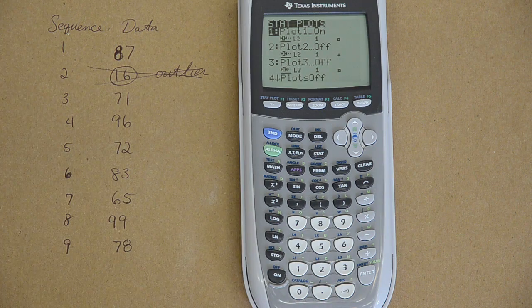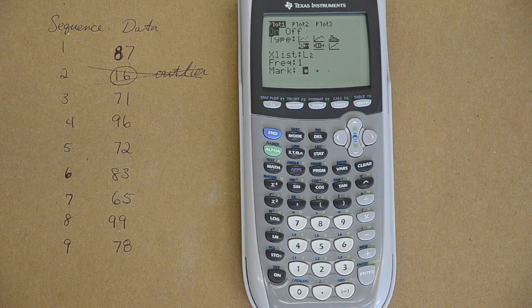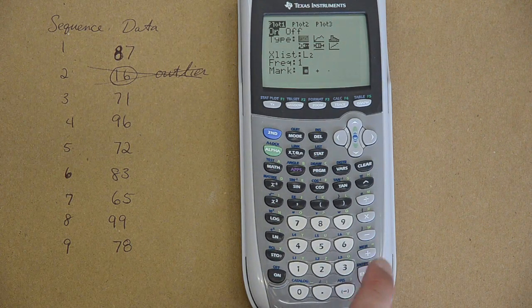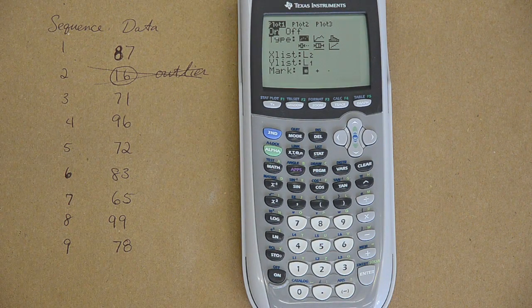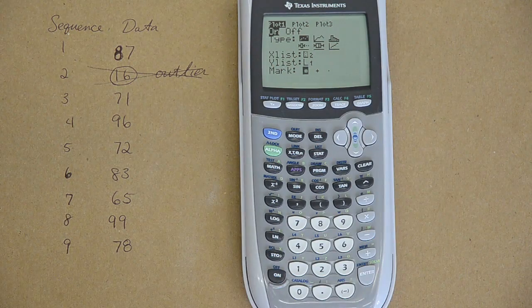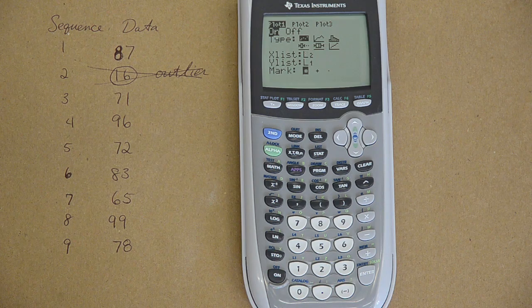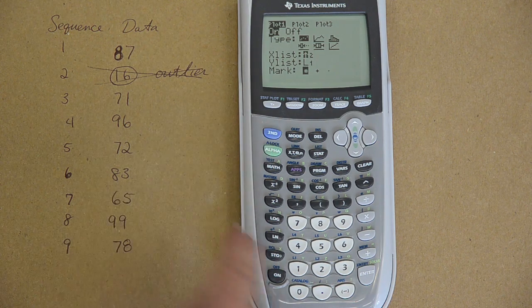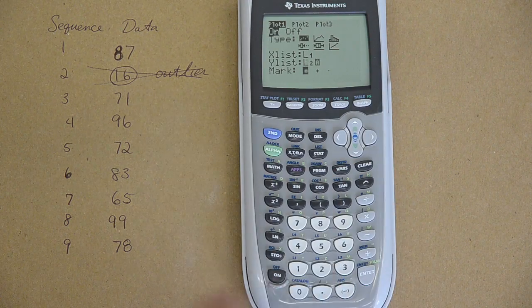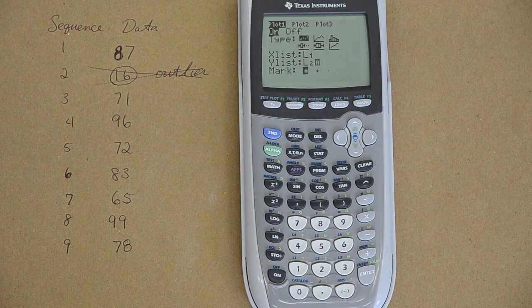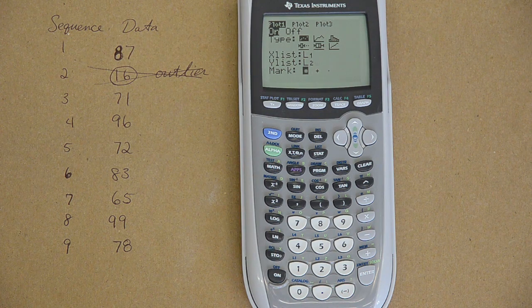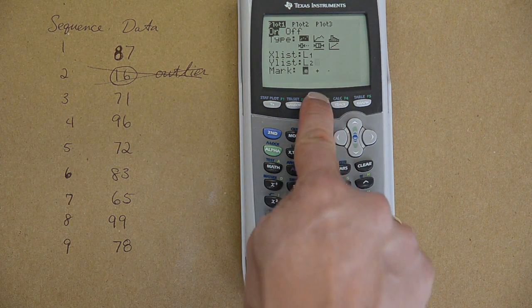Second stat plot, I am going to go back to stat plot one, I am going to turn on the scatter plot option, which is the first one in the first row. Now see what it is doing, it is saying where is the x's and where is the y's. My x list is going to be list one, that was the sequence of events, and my calculator right now is not set up correctly. So second L1, and for the y-list, it is going to be second L2. My time is going to be the list one, or x-list, and my data is going to be on the y-list, which was in list two. So zoom nine, let's see what happens.